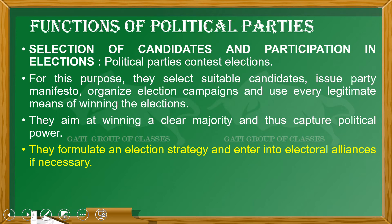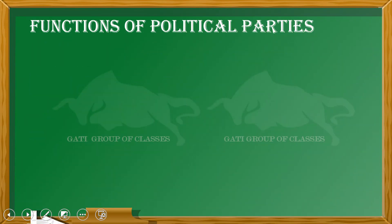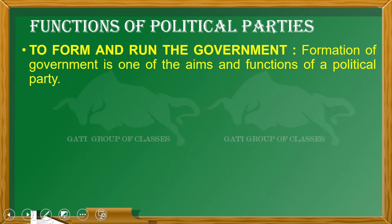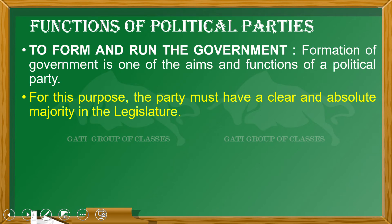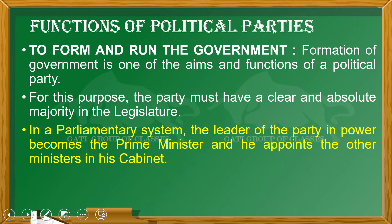Parties formulate an election strategy and sometimes make alliances with other parties to form the government. Formation of government is one of the main aims and functions of a political party, because they want to rule the country. For this purpose, a party should have a clear and absolute majority in the legislature such as in the Lok Sabha, which has direct elections. In a parliamentary system, the leader of the party in power becomes the Prime Minister.